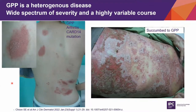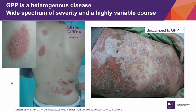The typical histologic features of psoriasis that we are all familiar with may be absent in acute GPP. GPP is a very heterogeneous disease with a wide spectrum of disease severity and a highly variable course. Some patients may have recurrent episodes of pustulation affecting less than 10% of their body surface area, while others may have recurrent episodes affecting the whole skin surface.